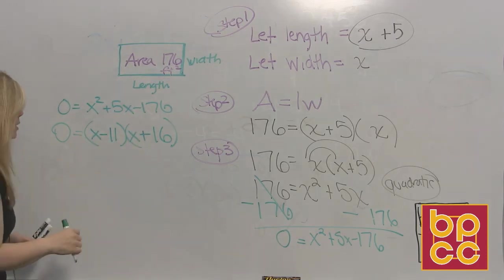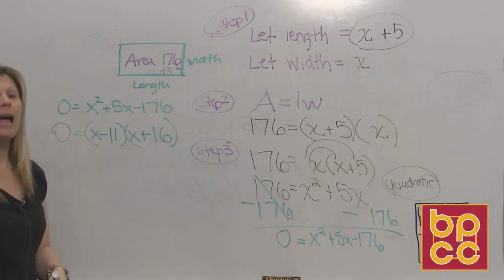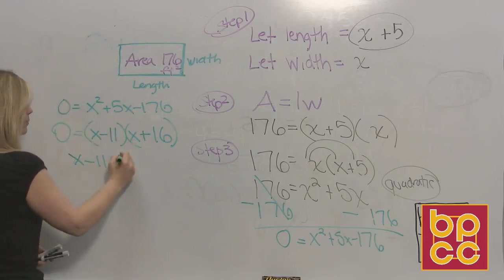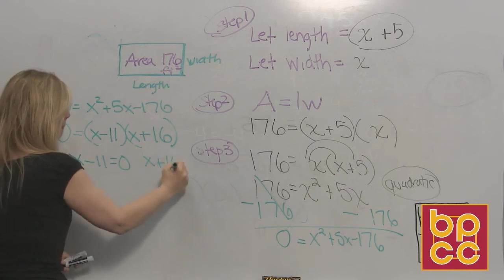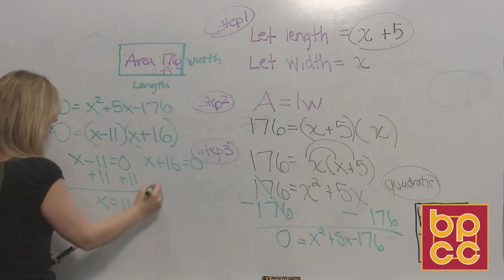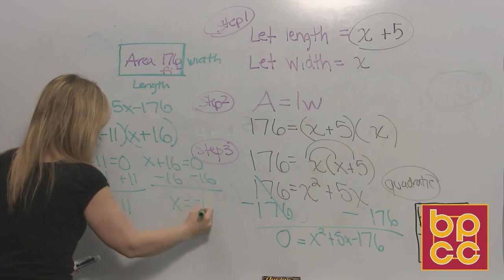Once you factor, here we go, it's not quadratic anymore. That's an x. That's an x. They're linear. How many x's are there? Two. So how many equations would you write? Two. And then you'll solve each. So one solution is x is 11, and the other solution is x is negative 16.